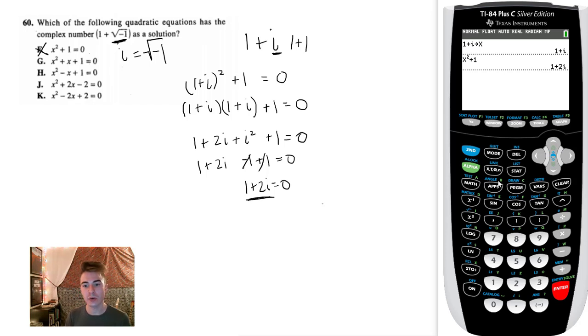Let's try choice g. Choice g says x squared plus x plus 1. Is that equal to 0? No. Let's try h, x squared minus x plus 1. Is that equal to 0? No, it's equal to i. We're getting close. At least we've only got two more. x squared plus 2x minus 2. If this doesn't work, it's got to be k, and we move on. So that's 4i. I'm just going to check k for us. If we do x squared minus 2x plus 2, we'll find that that is indeed 0.